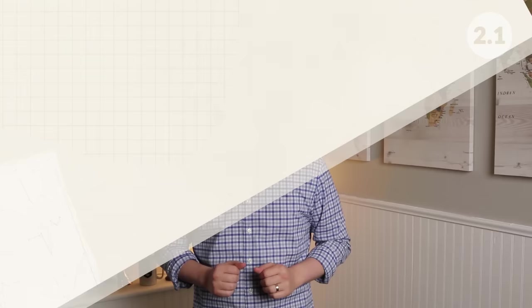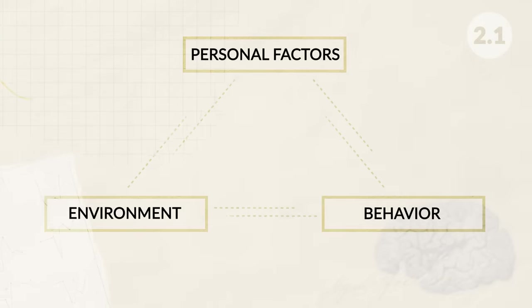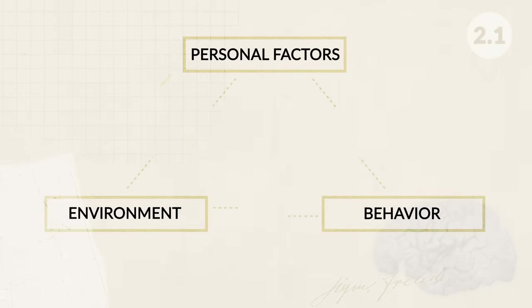We can see that when it comes to influences over our development, there is truth in both the nature and nurture sides of the debate. We will see this even more clearly when we go into reciprocal determinism in Unit 7, which looks at how the environment, an individual's behavior, and their individual feelings and beliefs all impact each other.